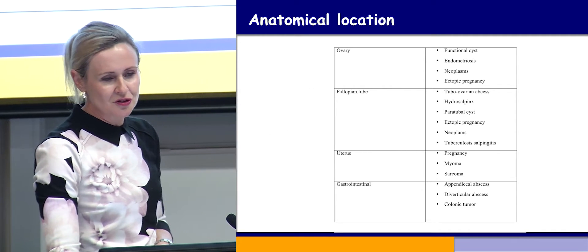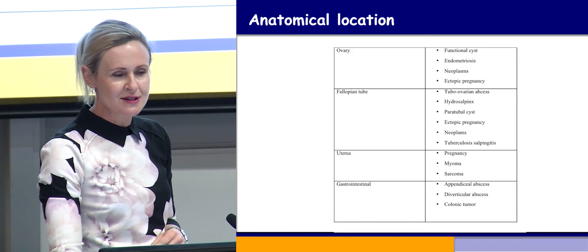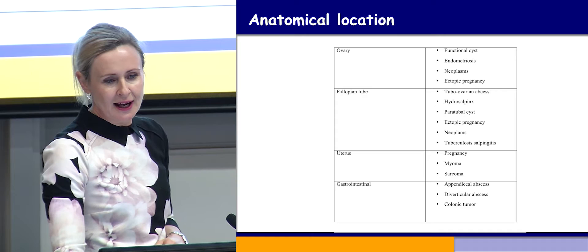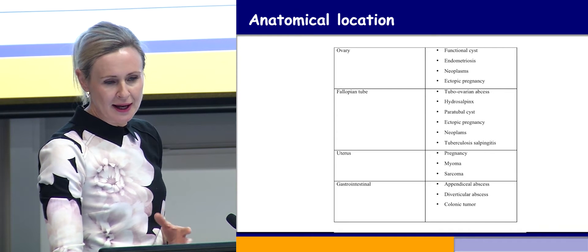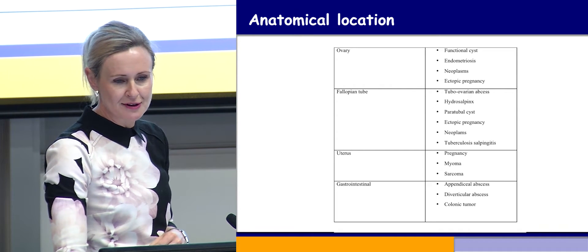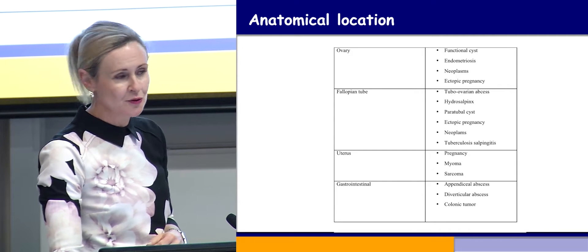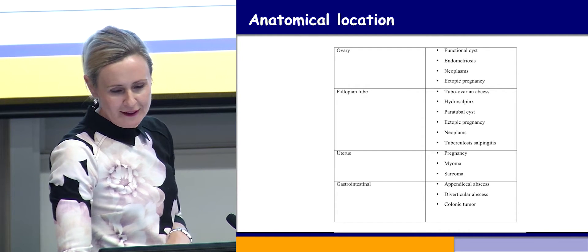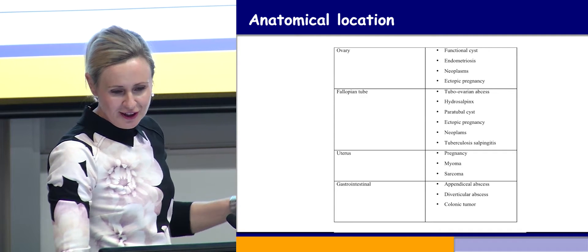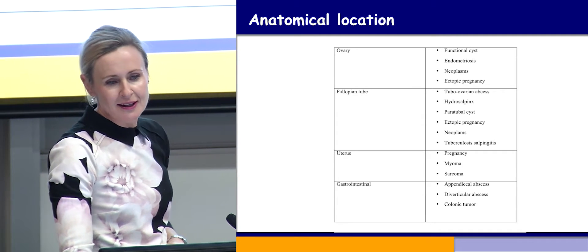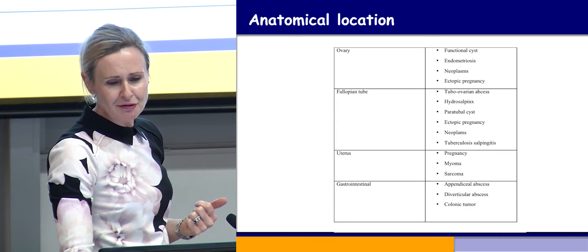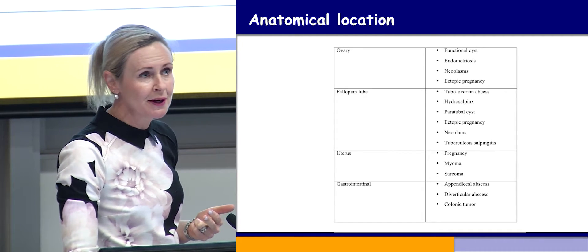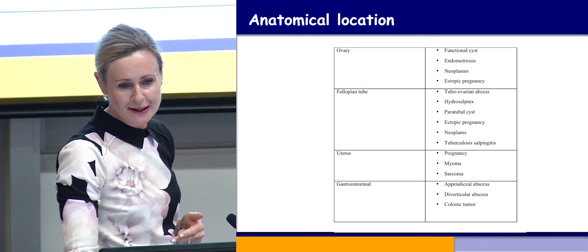Talking about pelvic masses, there are lots of different locations within the pelvis and causes of a pelvic mass. These can be divided up by anatomical locations: ovary, fallopian tube, uterus, and also gastrointestinal, which aren't necessarily gynecological but need to be on your radar. In the ovary we get functional cysts, endometriosis, neoplasms benign or malignant, or ectopic pregnancies.